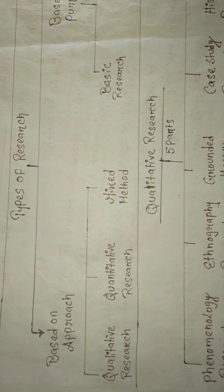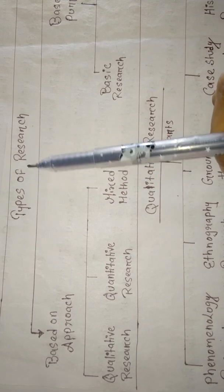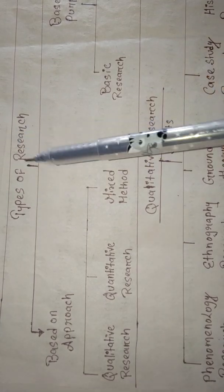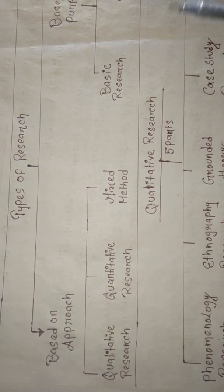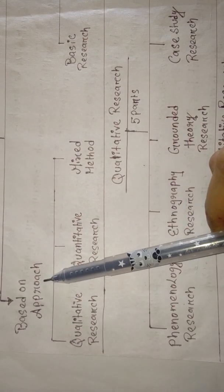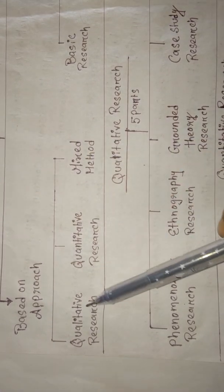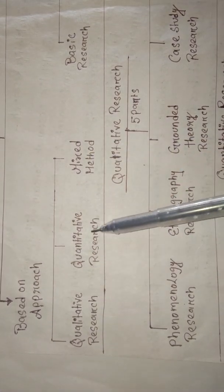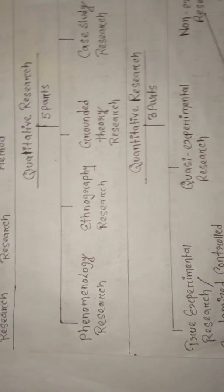Hello all. Let's study the types of research today. We were studying types of research - we will continue the rest of the topic. Today we will discuss research based on approach, which is divided into three parts: qualitative research, quantitative research, and mixed method.